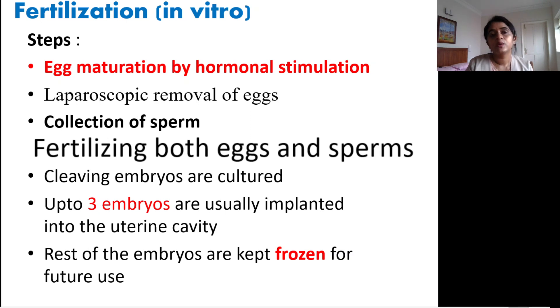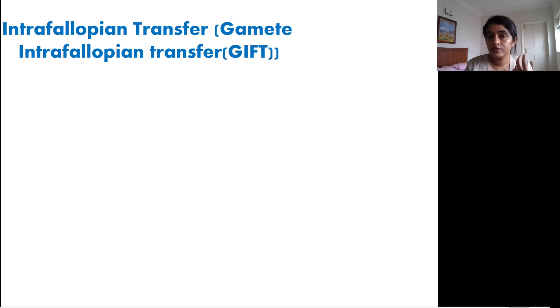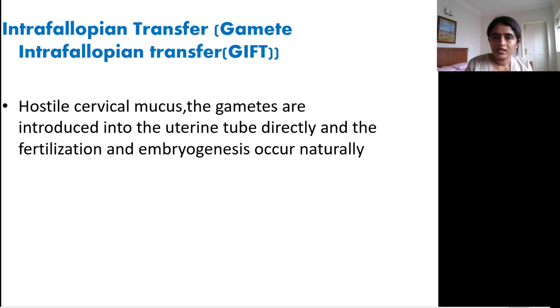The remaining embryos are kept frozen for future use in case the implanted embryos do not result in a successful pregnancy. One technique used is Gamete Intrafallopian Transfer (GIFT). In this procedure, gametes are placed directly into the uterine (fallopian) tube. It is used when the sperm has motility issues, when cervical mucus is hostile, or when the oocyte cannot reach the uterine tube. Fertilization and embryogenesis then occur naturally within the tube.